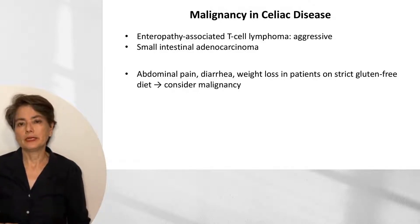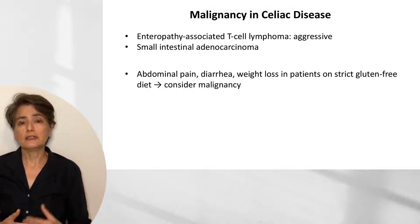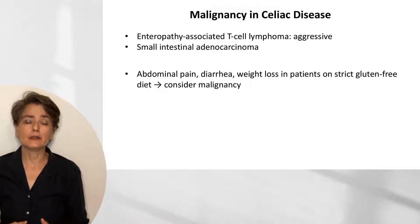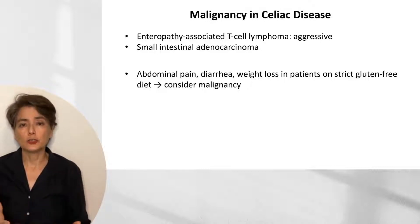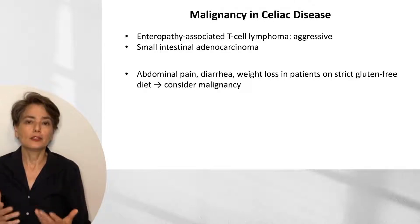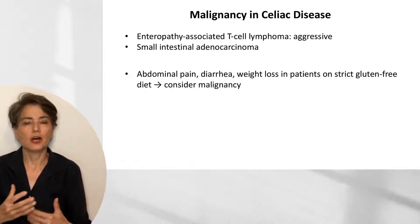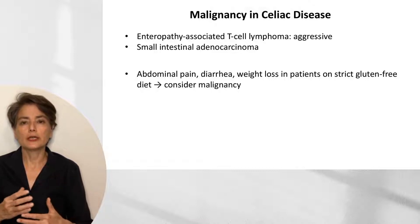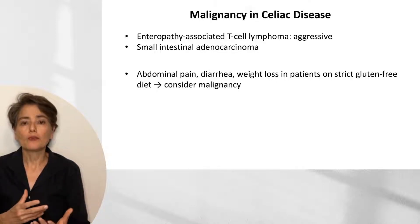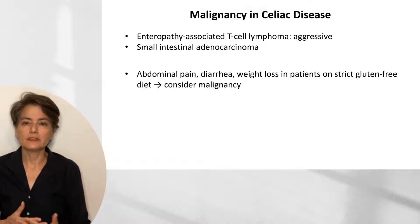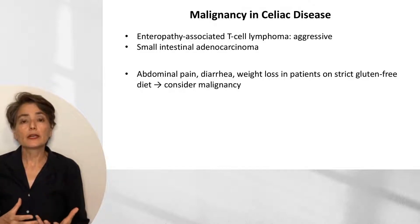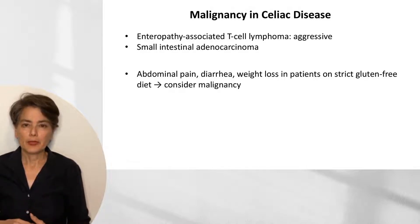But there's also the possibility they've developed a malignancy, because two malignancies are increased in incidence in individuals with celiac disease. The first to consider is enteropathy-associated T-cell lymphoma, similar to what we see in H. pylori gastritis-associated mucosa-associated lymphoid tumors. With constant inflammation, a very polymorphic group of T-cells can give rise to a neoplastic clone, and this enteropathy-associated T-cell lymphoma is quite aggressive.